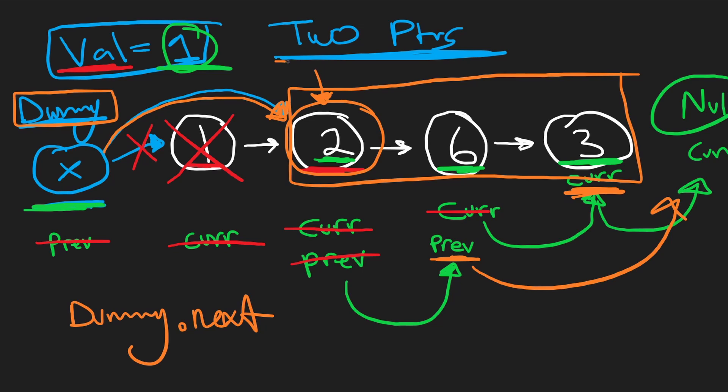And since the only extra memory we're using is pointers, the memory complexity of this is O of 1. And the time complexity is big O of N because we do have to iterate through the entire linked list.